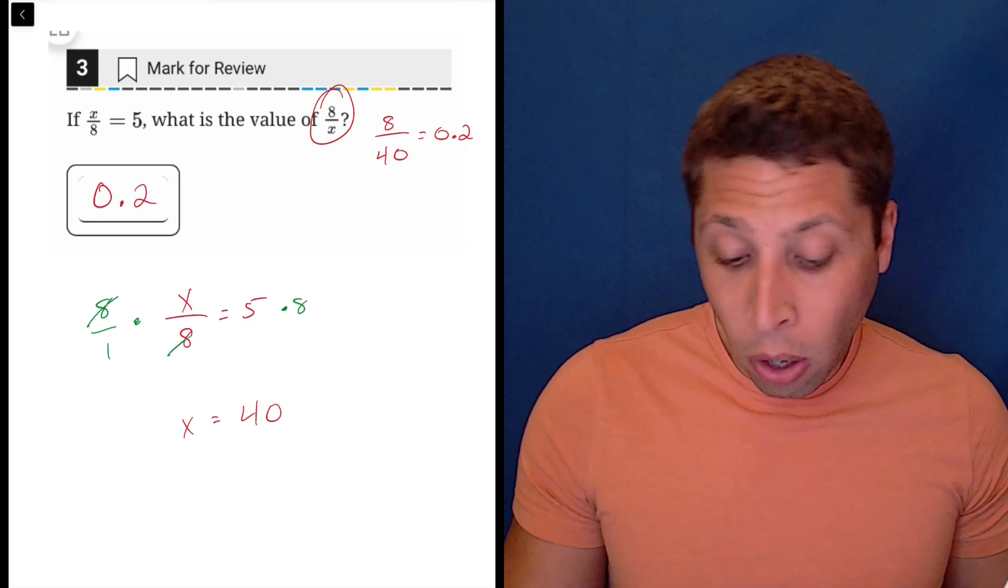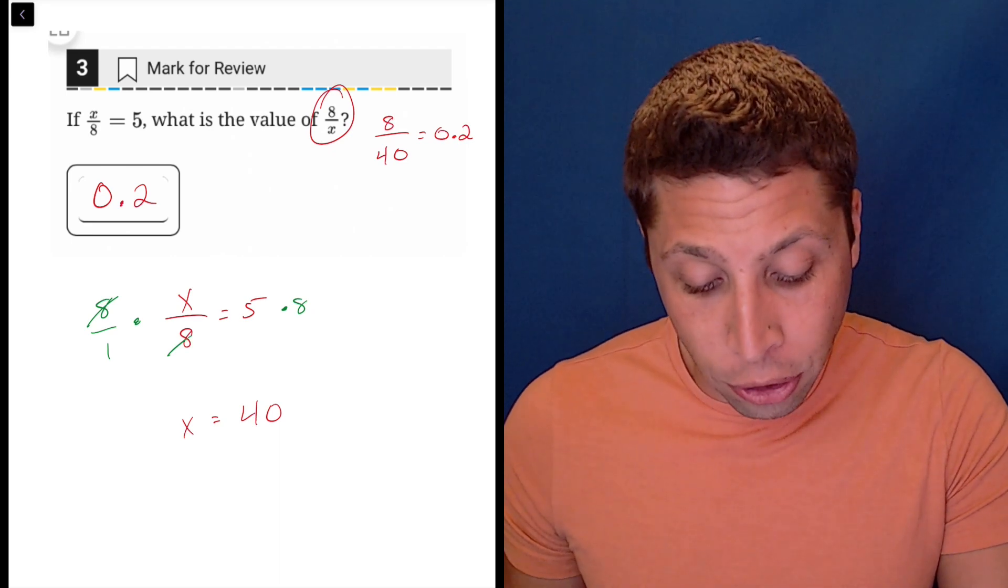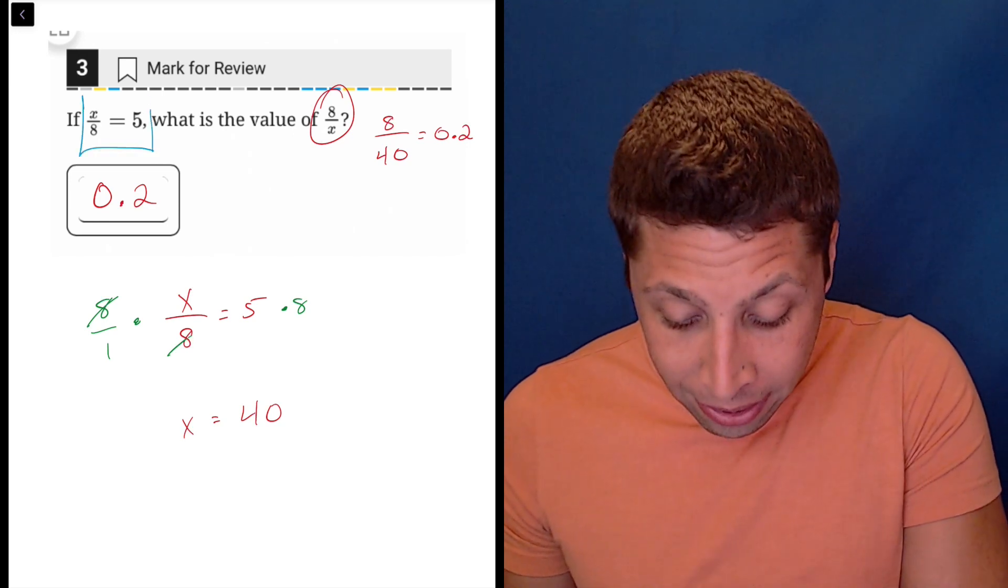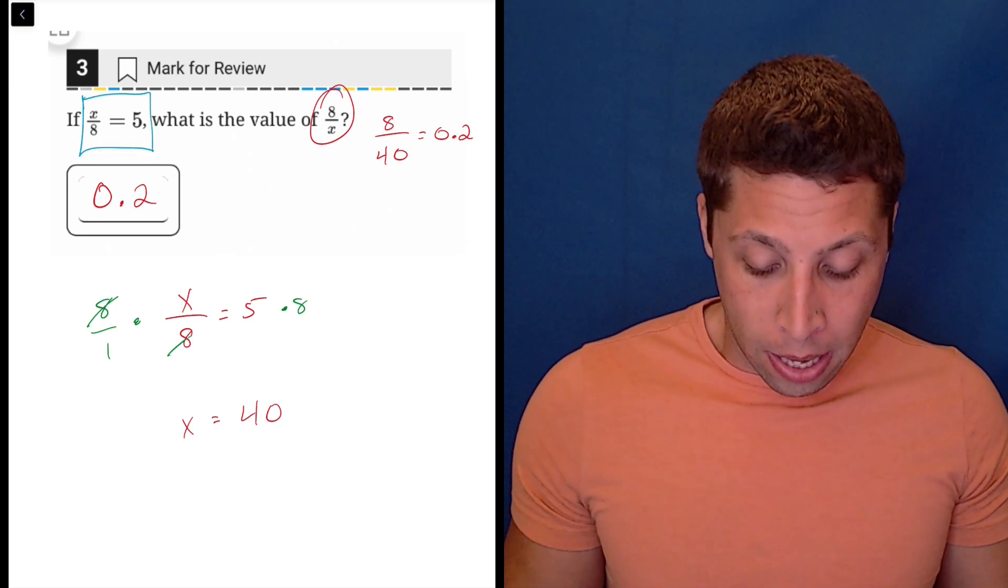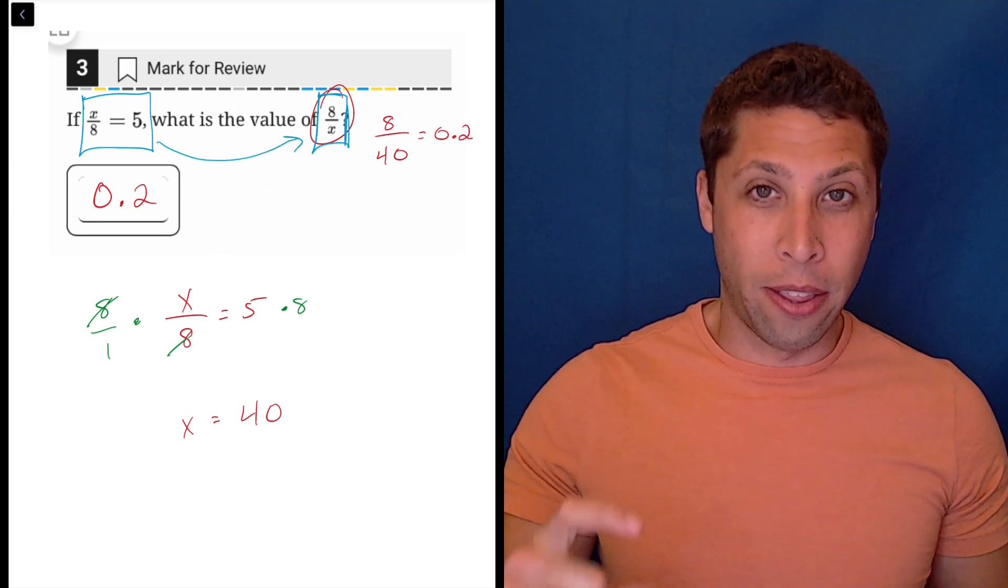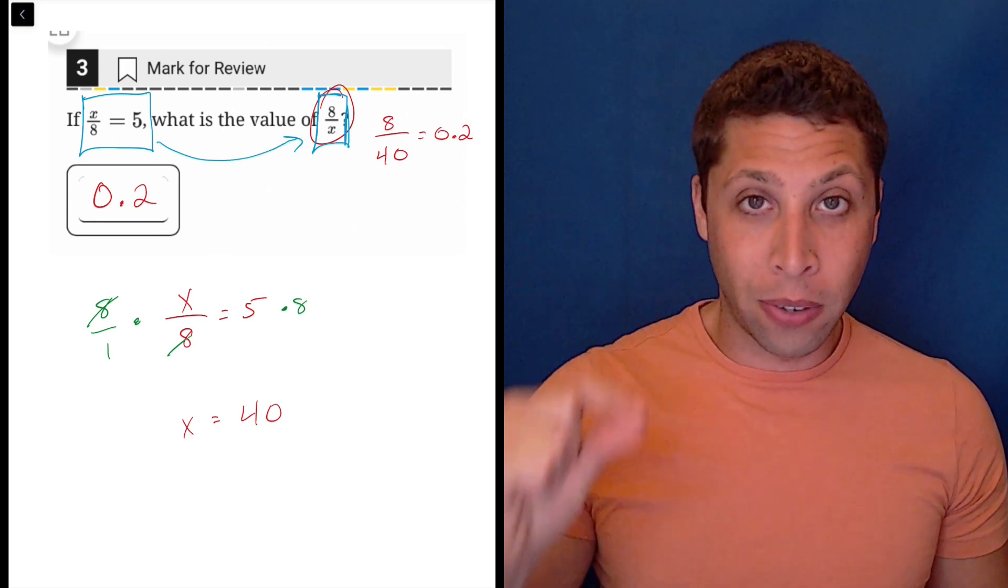Now we can also get this very quickly by just understanding what the shortcut was. So if I go back to this original and I compare that to what I'm being asked, you probably notice the pattern. The thing that they give us is X over eight, but the thing that they want is eight over X.